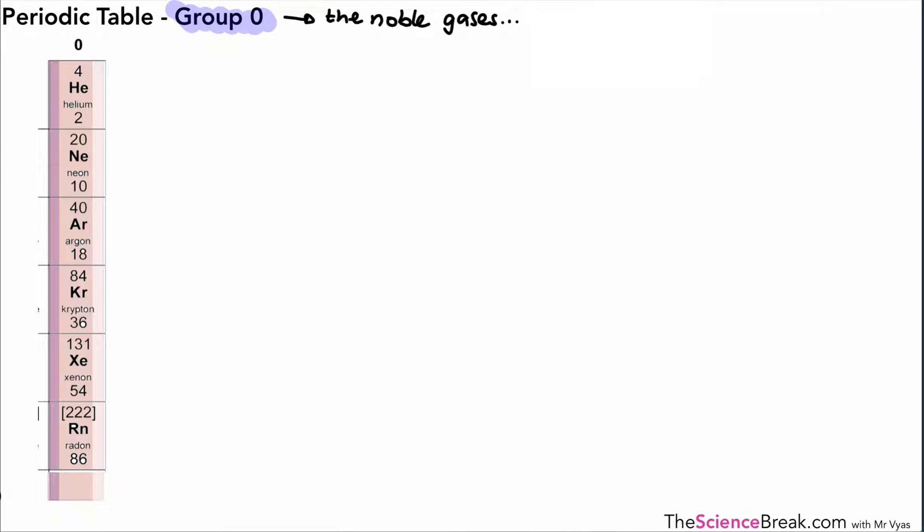They are found in a position right at the end over here - there's our noble gases at the end of the periodic table. You can see on the left hand side I've got them listed out. The first thing to remember about those is that they have a stable arrangement of electrons.